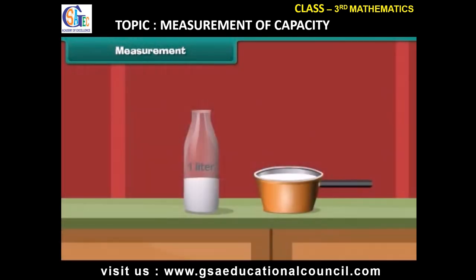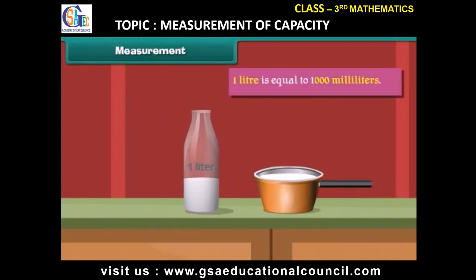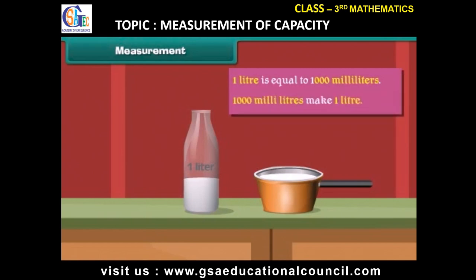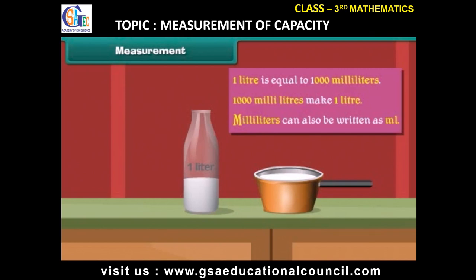One liter is equal to one thousand milliliters. This means one thousand milliliters make one liter. Milliliters can also be written as ml.